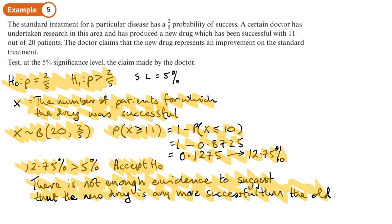So we must always have those steps when we do these hypothesis test questions. You should now be able to do Exercise 7C on pages 106 to 107 of the textbook.